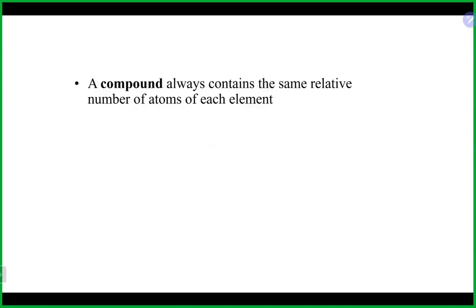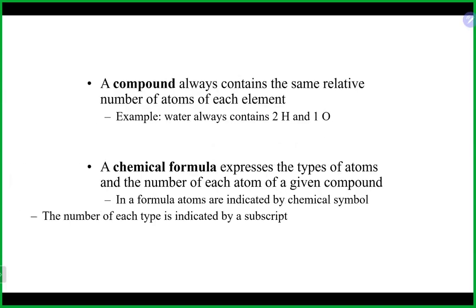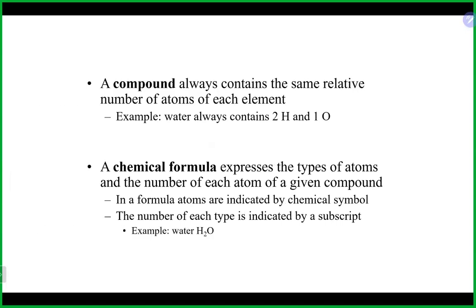We talked about compounds in previous chapters. A compound always contains the same ratio of elements. What makes a compound different from a molecule is that you need at least two or more different elements. For a molecule you just need two or more atoms — they could be the same or different — but for a compound you need two or more different elements.